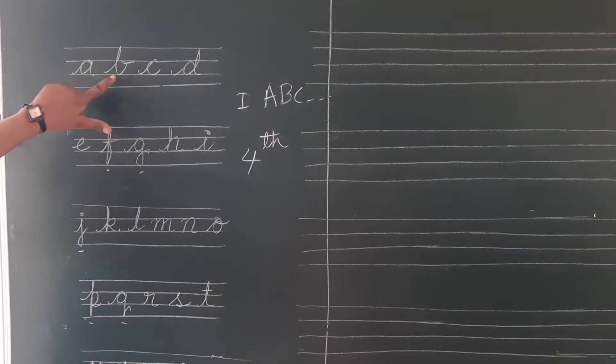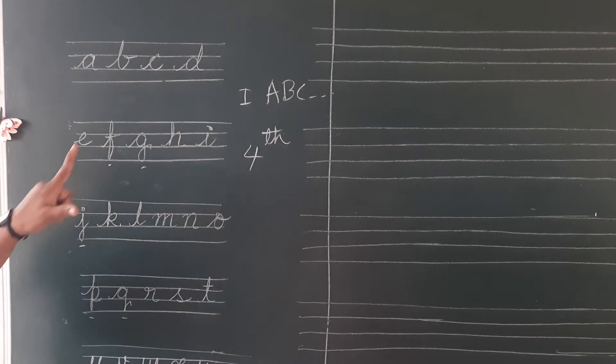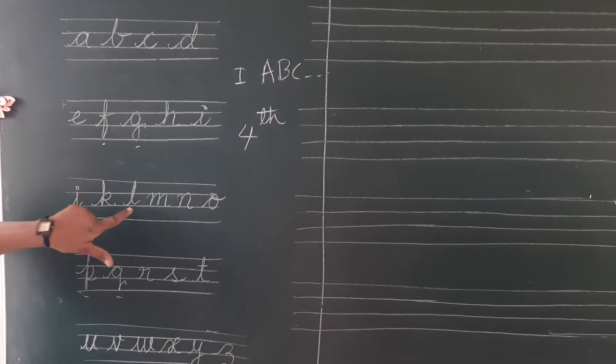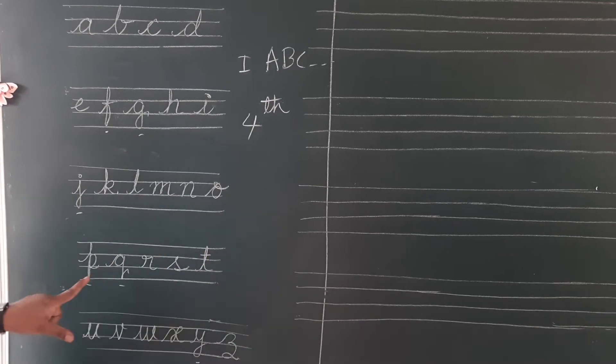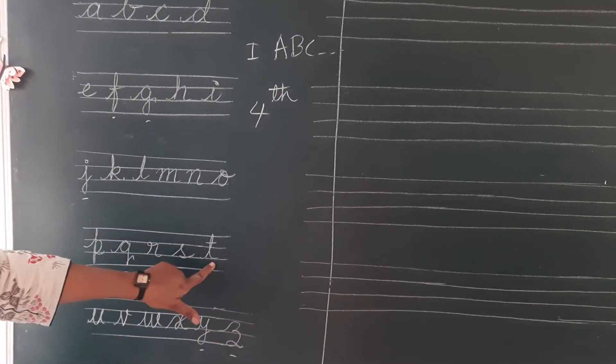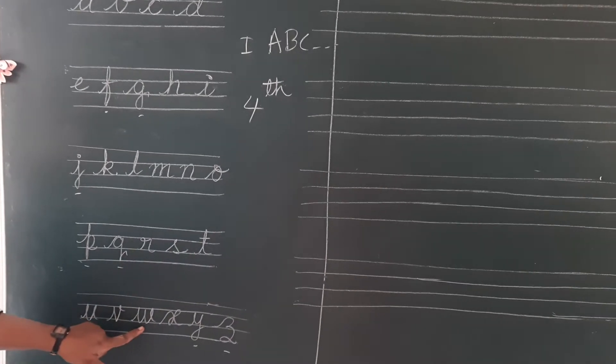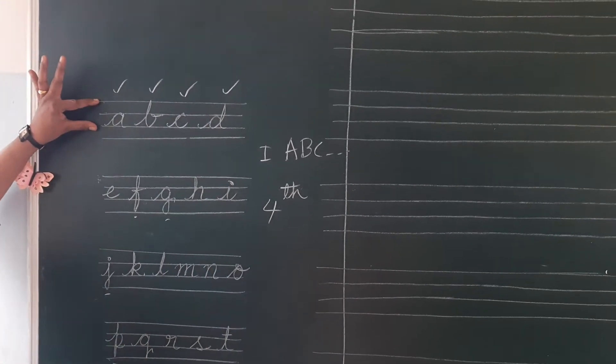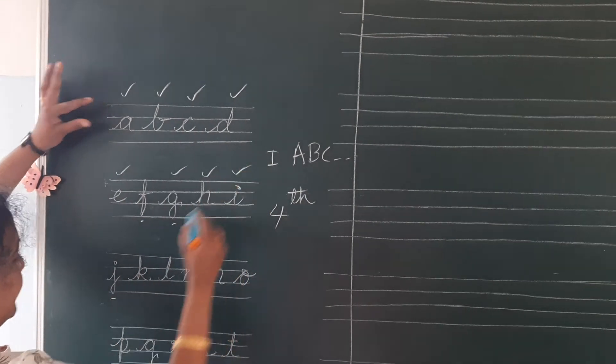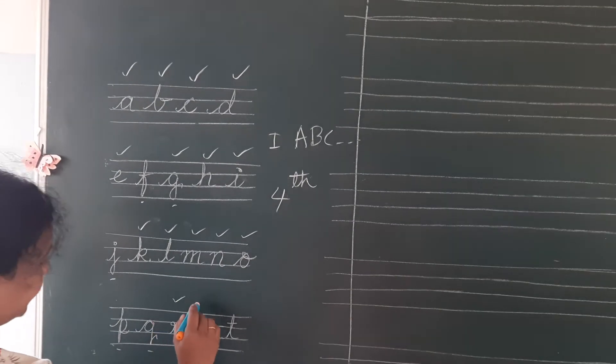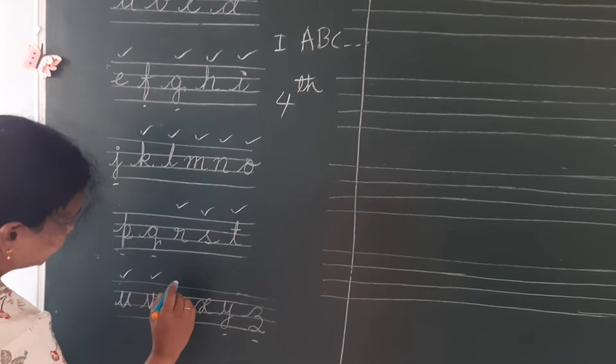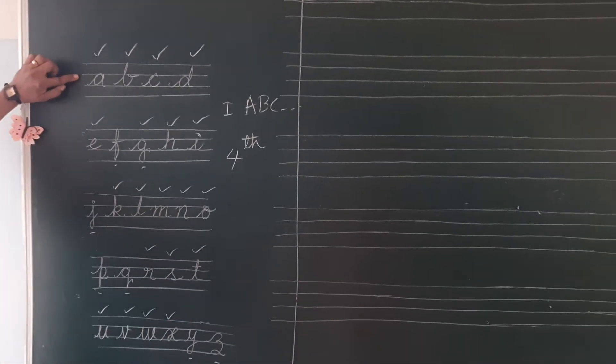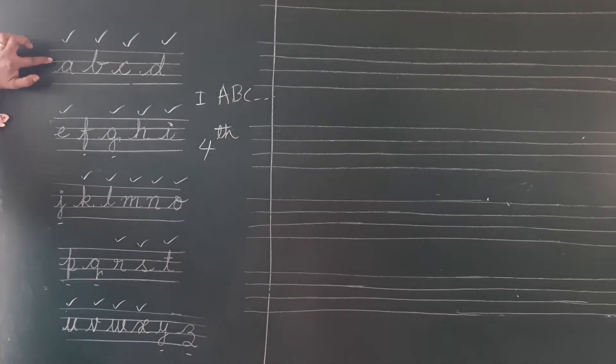For example, small A, B, C, D, E, H, I, K, L, M, N, O, R, S, T, U, V, W, X - these letters are called uppercase letters. These letters are called uppercase letters. That means first line, second line and third line - these three lines we have to touch for these letters.